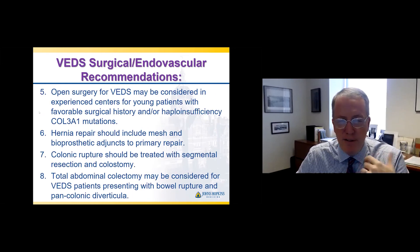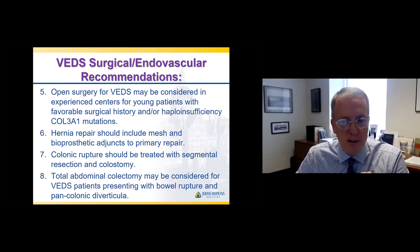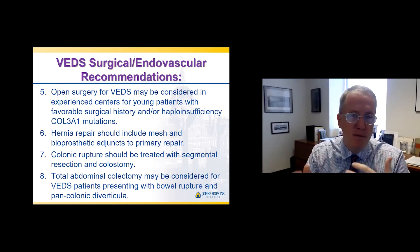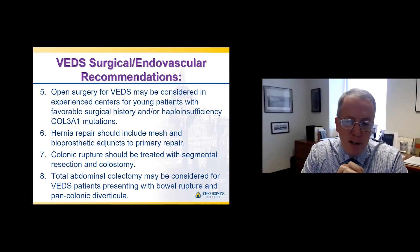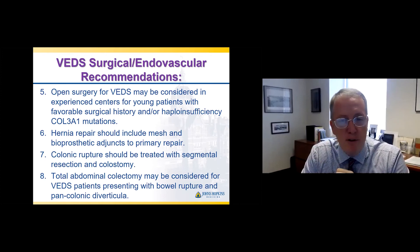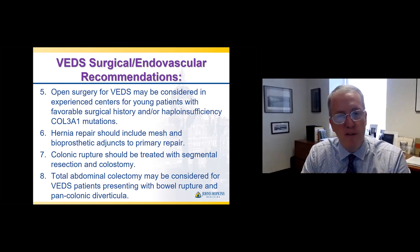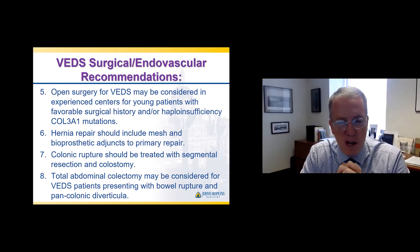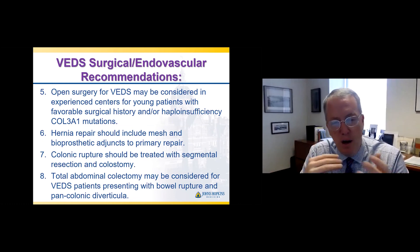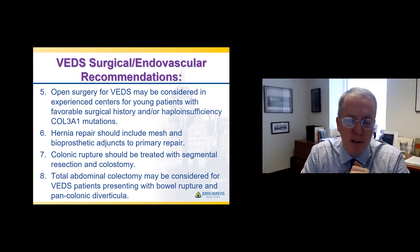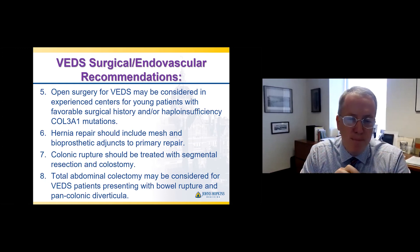Open surgery for vascular EDS should probably only be considered at experienced centers, in younger patients with favorable surgical history — that is, they did well with other operations. There is a unique type of mutation in collagen 3A1 called haploinsufficiency: a small percentage of people with vascular EDS will have this particular mutation that is clearly more favorable for surgical handling. A key question I ask patients when seeing them for the first time: what type of mutation do they have, what is their experience with surgery in the past, and how did things heal up?